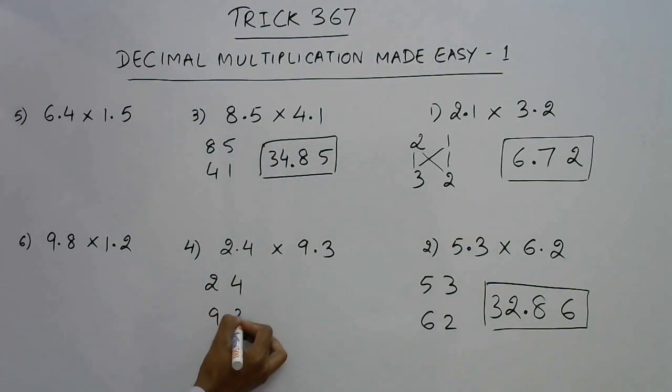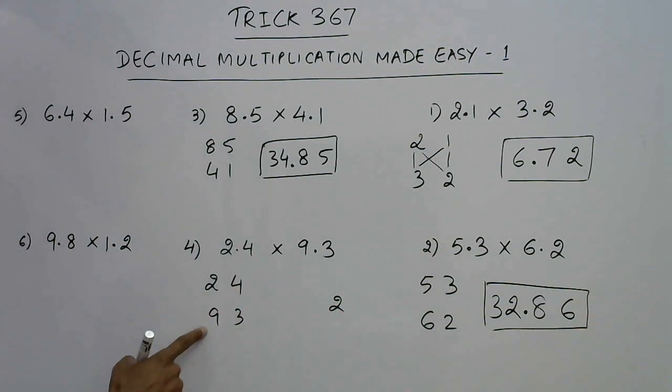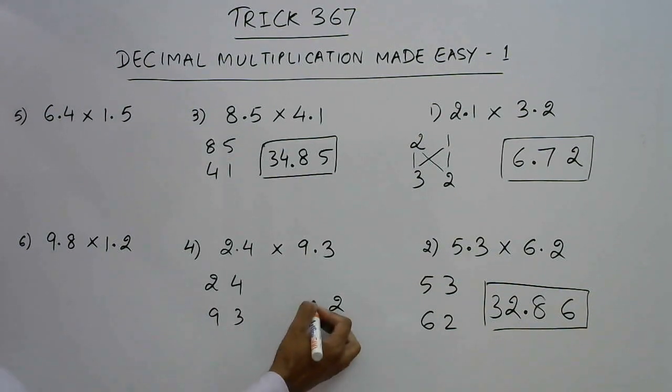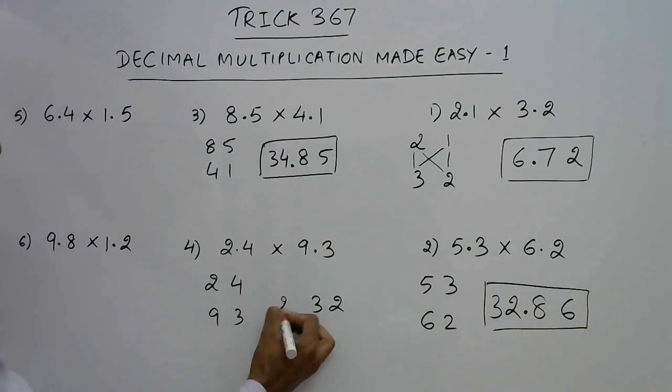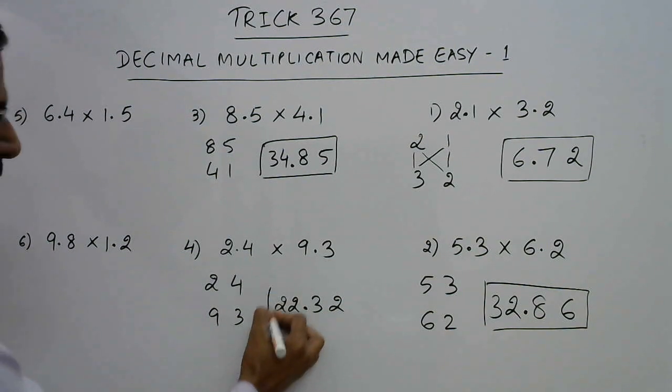2.4 and 9.3. 4, 3's are 12, write 2. You have a 1 carry. 36 plus 6 is 42 plus 1 carry 43, write 3. Now you have a 4 carry. 9, 2's are 18 plus 4, 22. So 22.32 is the answer.